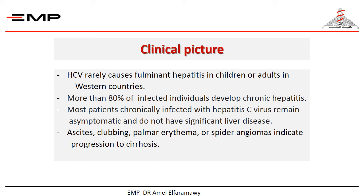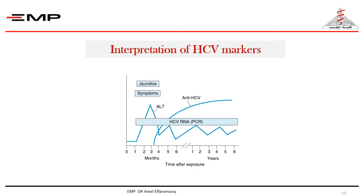Most patients chronically infected with hepatitis C virus remain asymptomatic and do not have significant liver disease. The presence of ascites, palmar erythema, or spider angiomas indicates progression to cirrhosis. HCV IgG may indicate past infection or persistent infection.